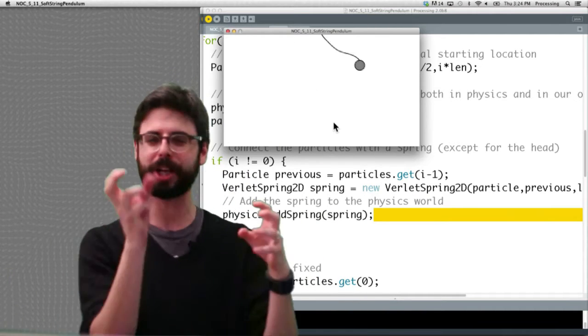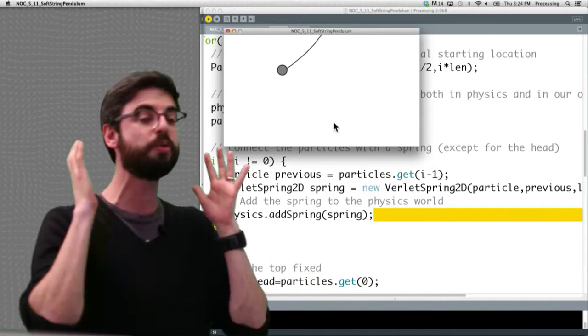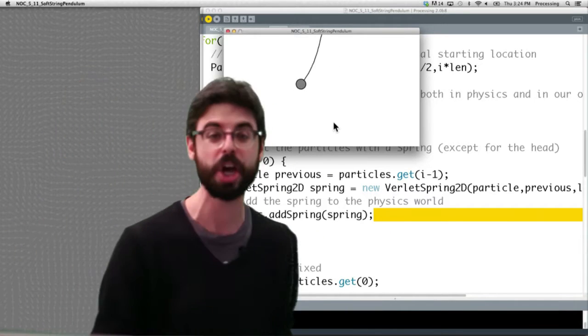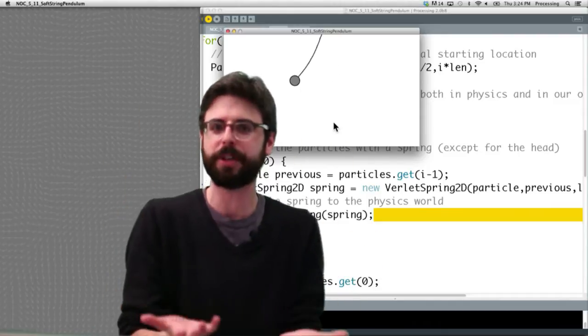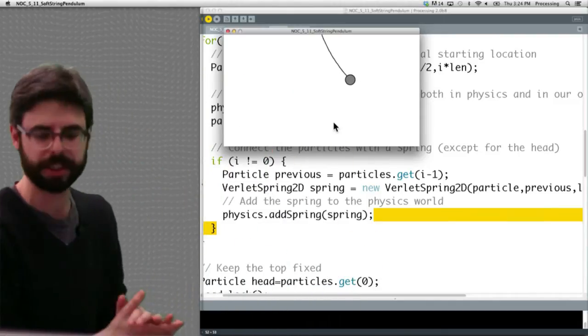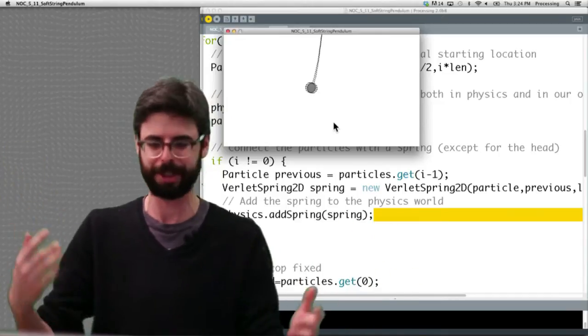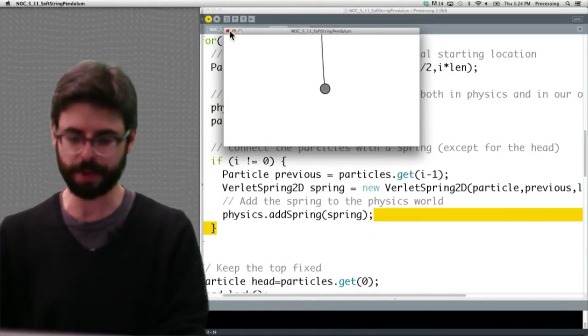Even though there are all these particles, we don't have to draw them. We're just drawing as a line. We could vary line thickness or make it curvy. You don't have to literally visualize the physics—you can use it as the underlying engine. This is a nice example of a soft string pendulum.